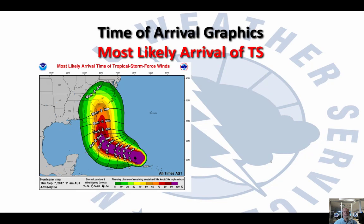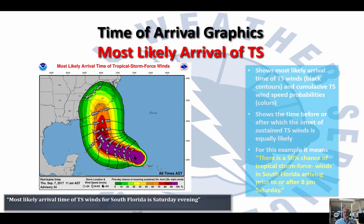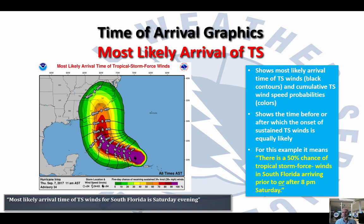The other version is called the most likely arrival time. Based on that same forecast, this shows that the most likely arrival time of tropical storm force winds is 8 p.m. Saturday — about a 12-hour difference from the earliest reasonable time of 8 a.m. What this is showing is the time before or after which, on average, the onset of those sustained tropical storm force winds is equally likely. Another way to say this: there's a 50 percent chance of tropical storm force winds in South Florida arriving prior to or after 8 p.m. Saturday.